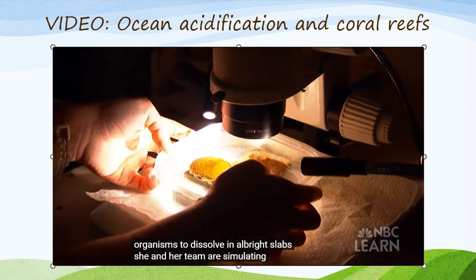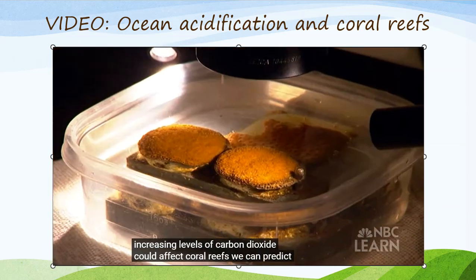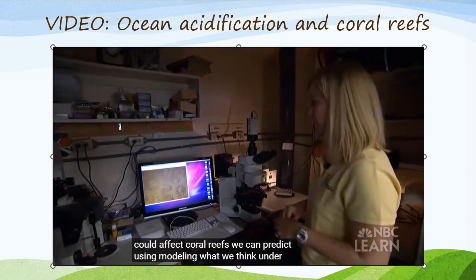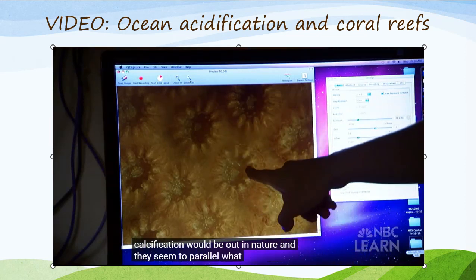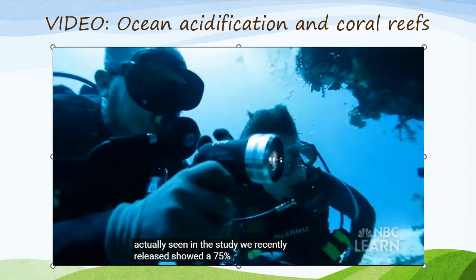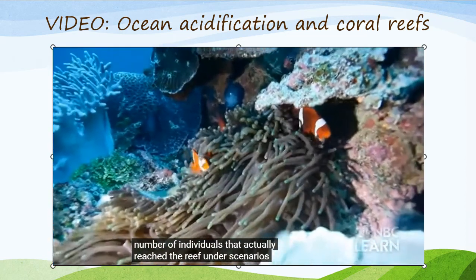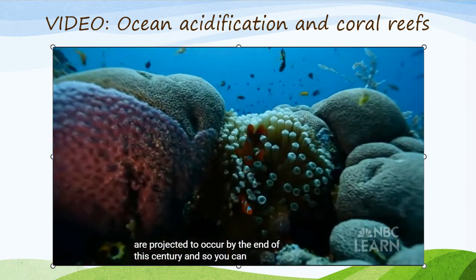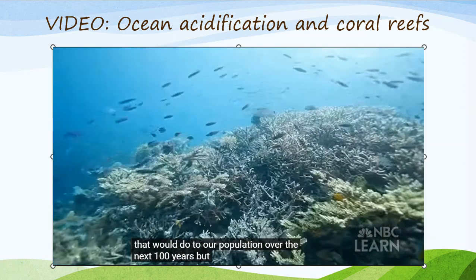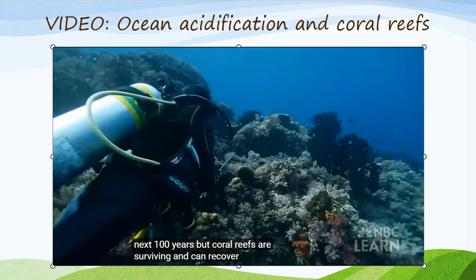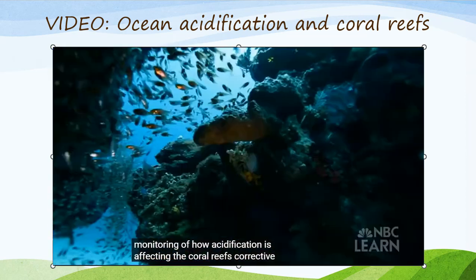In Albright's lab, she and her team are simulating conditions to study how increasing levels of CO2 could affect coral reefs. Using modeling, they can predict what declines in calcification would occur in nature, and these seem to parallel what has actually been observed. A recent study showed a 75% decline in the number of individuals that actually reached the reef under scenarios projected to occur by the end of this century. But coral reefs are surviving and can recover and grow again, and with better understanding and more monitoring of how acidification is affecting coral reefs, corrective measures can be taken.